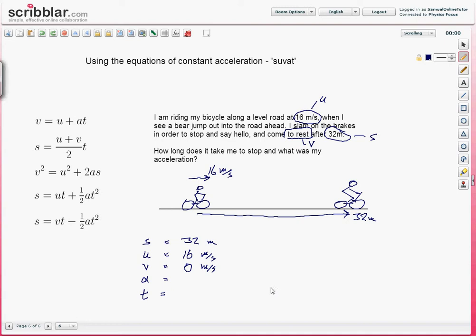We now know three of the values, therefore we can work out the other two. How long does it take me to stop? How long? That's asking for T. And what was the acceleration? That's asking for A. So we want to find out these two values. Okay?